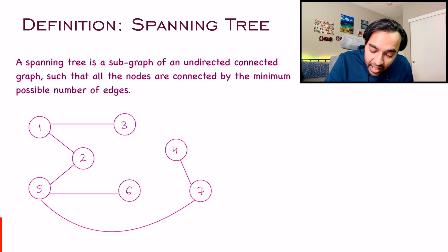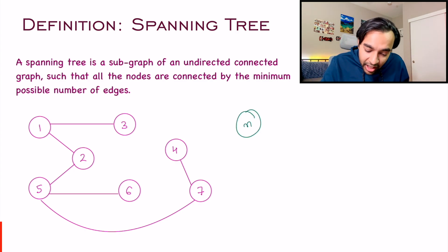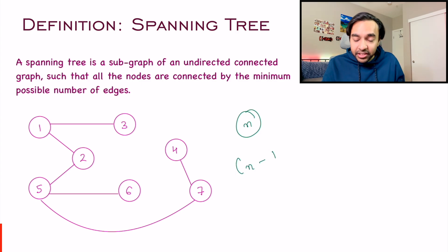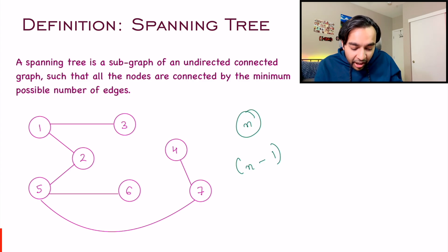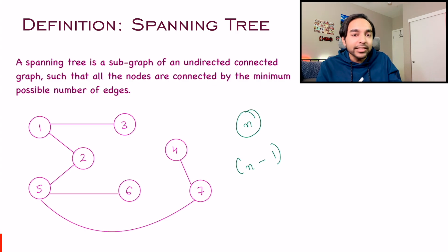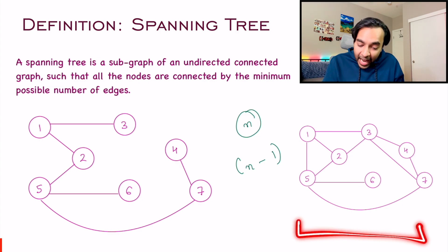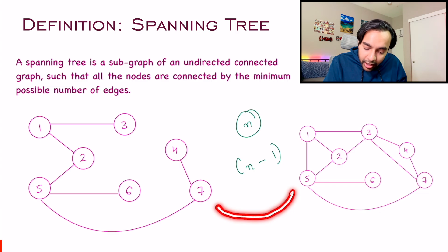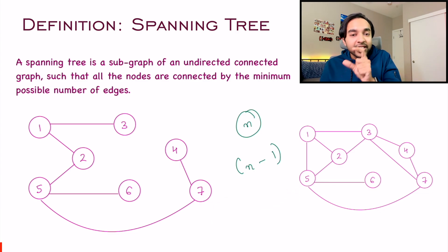If you have n nodes in a graph, the spanning tree will have n-1 edges — and that is a rule, so you know when to stop. Currently in my graph, I have seven vertices and six edges, so I can safely say this is my spanning tree. I had the original graph and I was able to convert it to a spanning tree by having the minimum number of edges required.